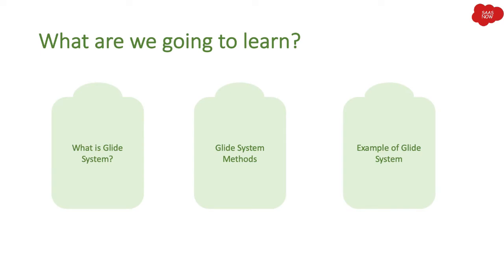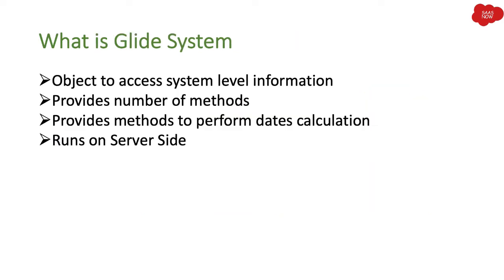What are we going to learn in this session? We are going to talk about what is GlideSystem, GlideSystem methods, and examples of GlideSystem. Now, GlideSystem is an object used to access system-level information. It provides a number of methods which you can utilize to access system-level information. It provides methods to perform date calculations, and the most important part is it runs on the server side.